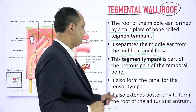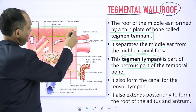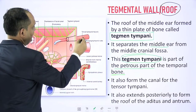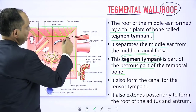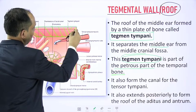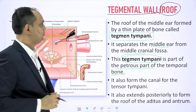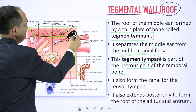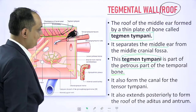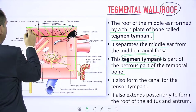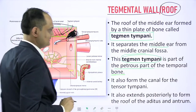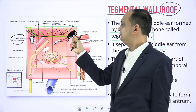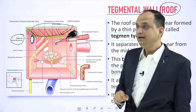The tegmen tympani is a part of the petrous part of the temporal bone. It also forms the canal for the tensor tympani muscle. In the anterior wall there is a small foramen through which the tensor tympanae muscle enters the middle ear, and the superior wall of that canal is also formed by this roof. So the tegmen tympanae contributes anteriorly to the roof of the canal for the tensor tympani muscle, and posteriorly forms the roof of the aditus opening in the posterior wall.